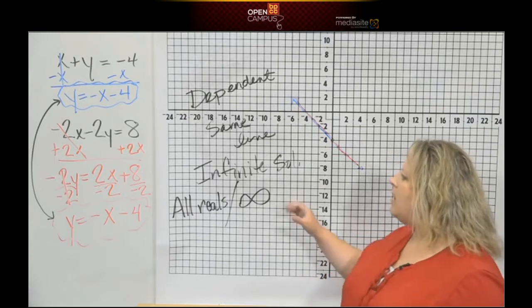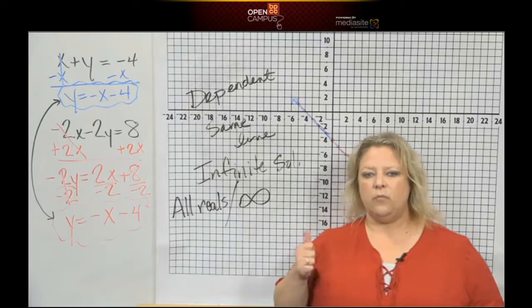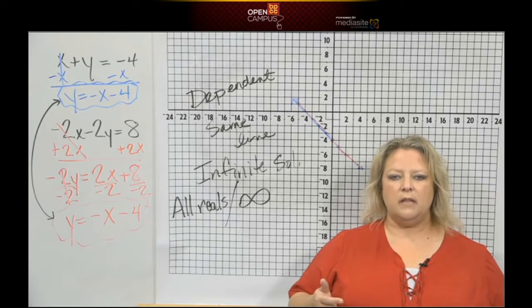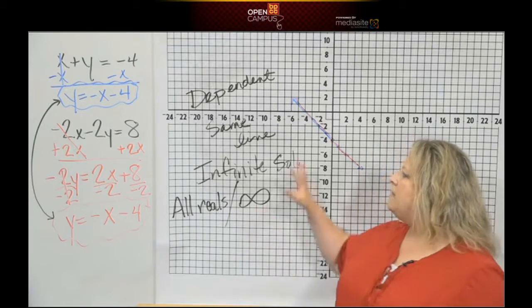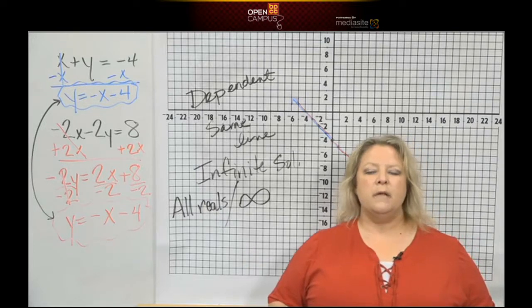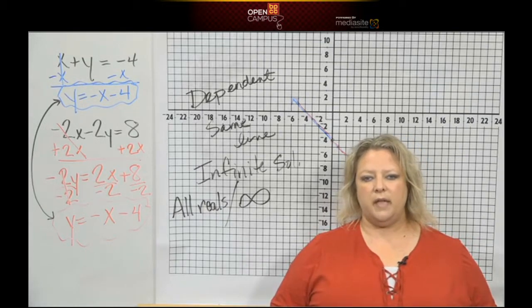So that's all I have to say. You have one example where they intersect, and you have a solution. One example where they're parallel lines, so they have no solution. This is your example of dependent where they have an infinite number of solutions. Those are the only three types of answers that you could possibly get.